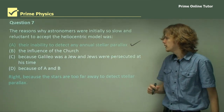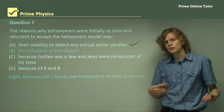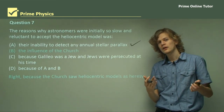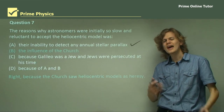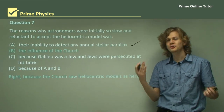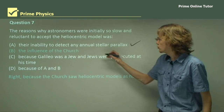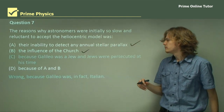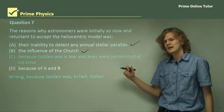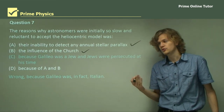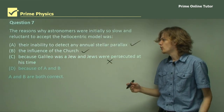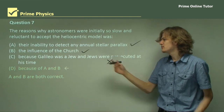Option B: the influence of the Church. We know the Church advocated a geocentric model and said a heliocentric model was heresy and went against the Word of God. Because of this, people were very reluctant to accept the heliocentric model, especially after seeing what happened to Galileo. So B is also correct. Option C — that Galileo was a Jew and Jews were persecuted at his time — is not right because Galileo was Italian and not in fact Jewish. So both A and B are correct, and option D, which says because of A and B, is the correct answer.